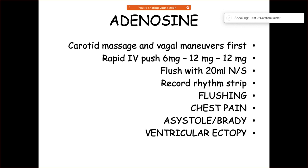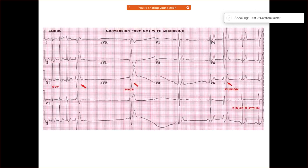There is a step-up dosing protocol: start with 6 mg, then go to 12 mg, and up to 15 mg, always followed by a quick normal saline flush. Keep recording the ECG rhythm while administering. Patients may report chest pain or exhibit ventricular ectopy — this is a classical response with adenosine.